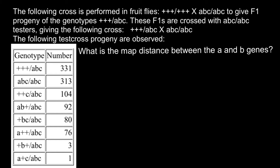Hello and welcome to Nikolai's Genetics Lessons. Today's problem involves the following crosses performed in fruit flies. Here's the genotype of one parent and the genotype of the second parent, giving F1 progeny of specific genotypes. These F1s are crossed with another genotype called testers, giving a test cross. The following test cross progeny are observed in this table. What is the map distance between gene A and B?